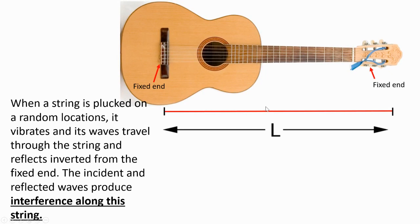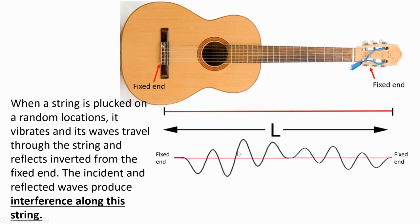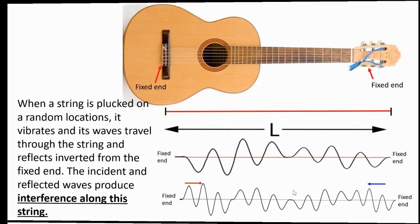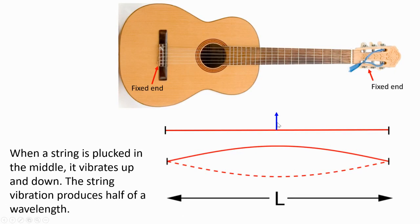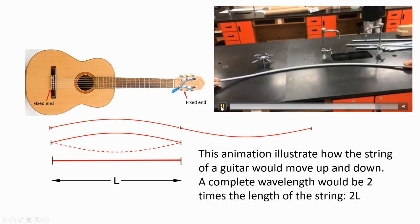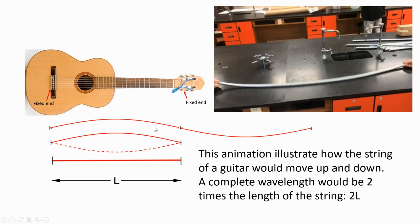When a string is plucked at a random location, it vibrates and its waves travel through the string and reflect inverted from the fixed end. When a string is plucked in the middle, it vibrates up and down. This animation illustrates how the string of a guitar moves up and down. A complete wavelength will be two times the length of this string.